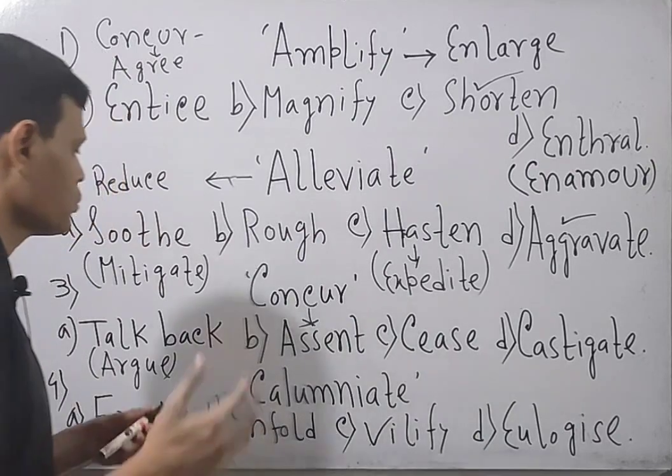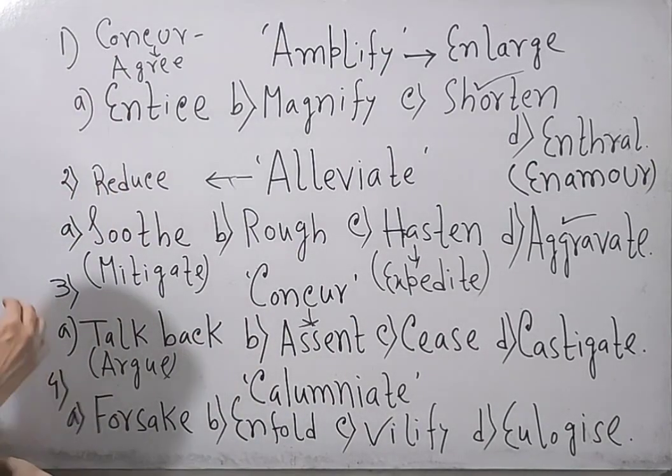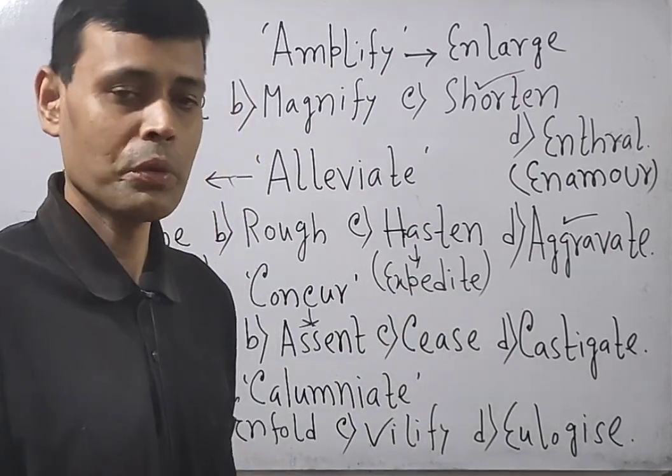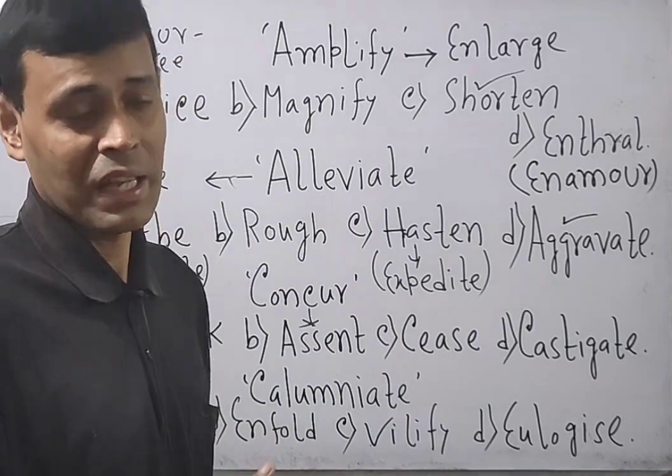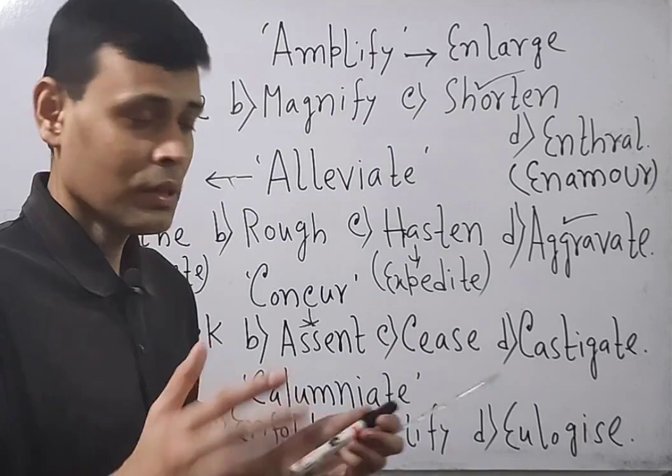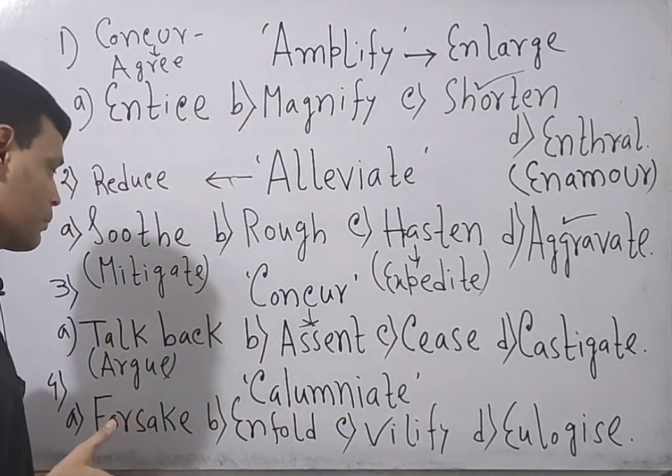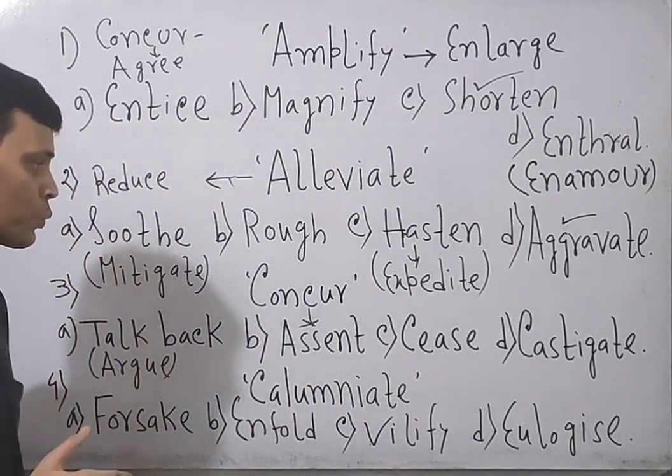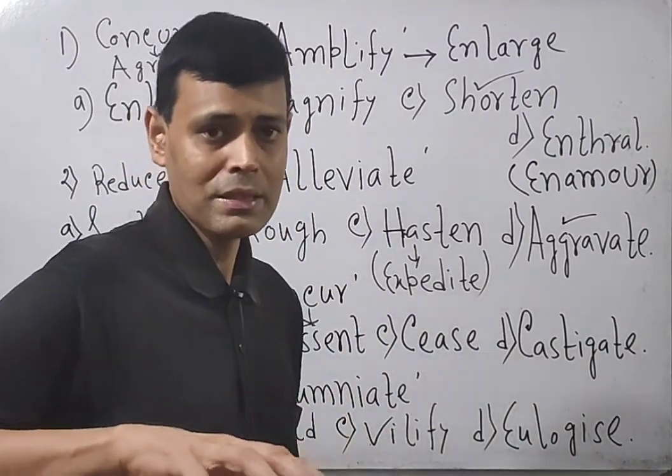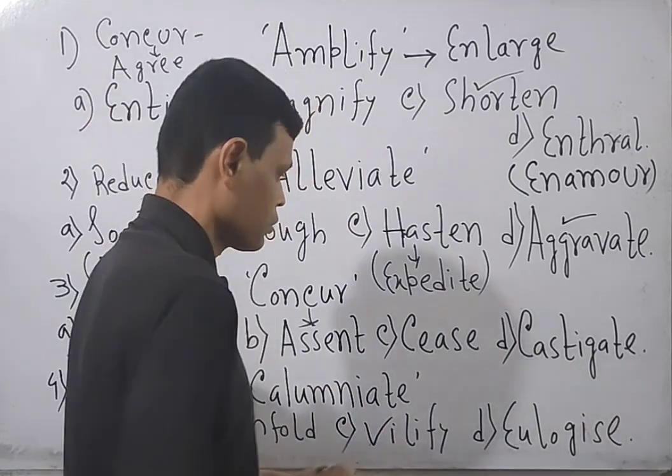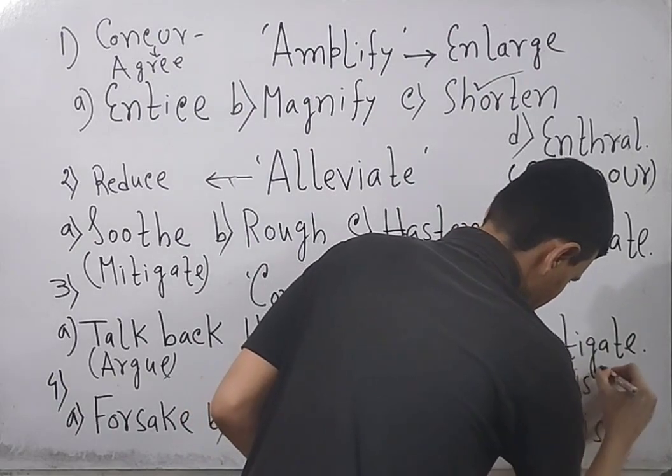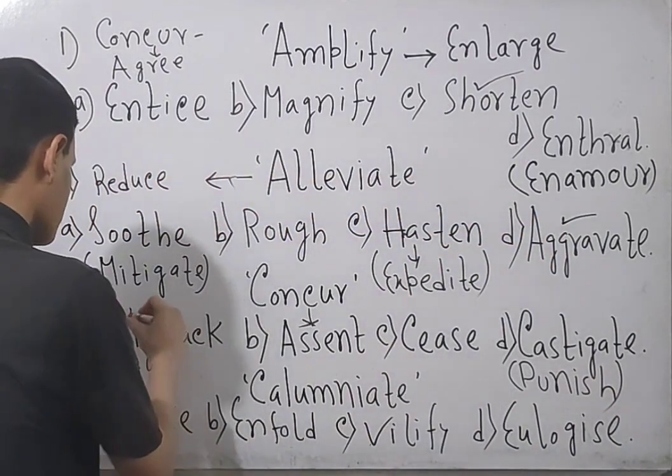Cease means total stop or halt. Castigate means punish. Now look through the question again, concur. Whenever you are going to agree with someone, you don't need to go into any argument. But whenever you are not agree, there may be a matter of argument. That's why here the antonym should be talkback or argue.